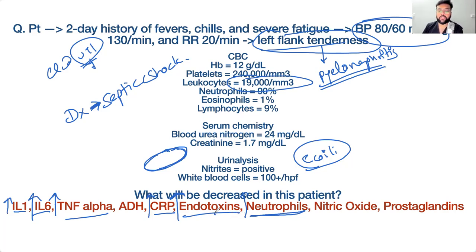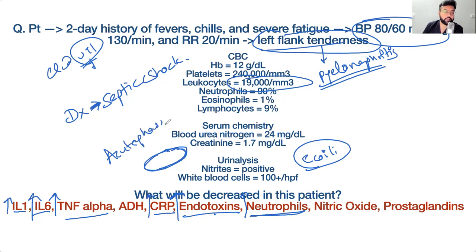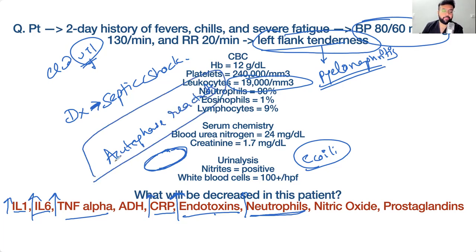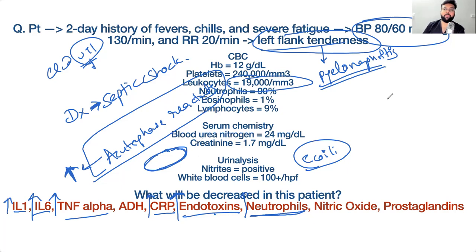Neutrophils will increase — they are elevated in sepsis. Endotoxins damage endothelial cells and upregulate acute phase reactants. If asked about acute phase reactants in septic shock, they will be increased.